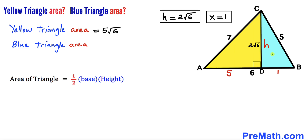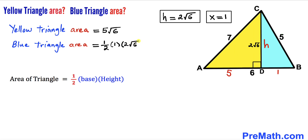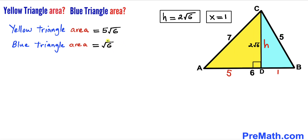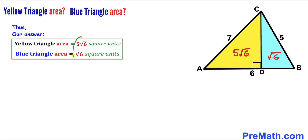Now let's calculate the area of the blue triangle, whose base is one (BD) and height is 2√6. The area = ½ × 1 × 2√6 = √6 square units. So our final answers are: yellow triangle area = 5√6 square units and blue triangle area = √6 square units. Thanks for watching — please don't forget to subscribe for more exciting videos!